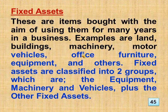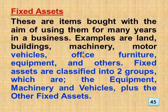Fixed assets are items bought with the aim of using them for many years in a business. Examples are land, buildings, machinery, motor vehicles, office furniture, equipment, and others. Fixed assets are classified into two groups: equipment, machinery and vehicles, plus other fixed assets.